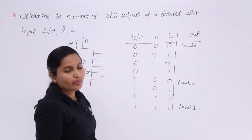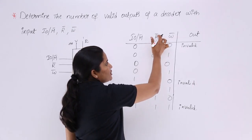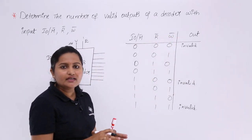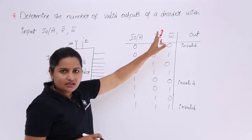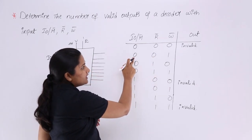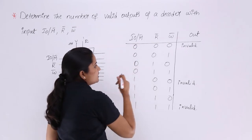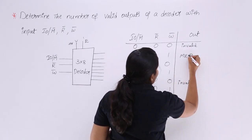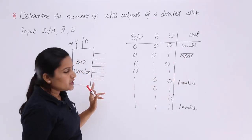For combination 001 — R is 0 and W is 1. Since R and W are active low signals, R=0 activates read and W=1 deactivates write. So this is a read operation. Looking at the M bit: 0 activates memory, 1 activates I/O. Here M=0, so this is a memory read operation — MEMR.